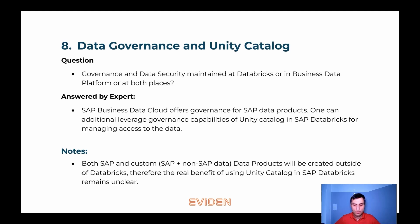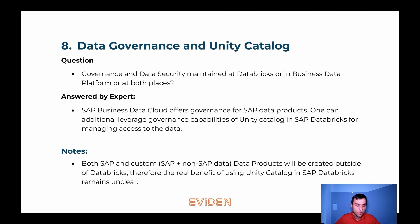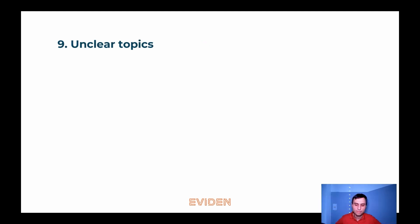Let's quickly discuss the data governance topic and the role of the Unity Catalog. As you might know, both SAP DataSphere and Databricks have their own data catalogs. In the SAP vision, DataSphere acts as both a data extraction and data modeling tool — and in such a world, the role of the Databricks Unity Catalog remains unclear to me. On the other hand, if you plan to use SAP Business Data Cloud primarily to create and share SAP data products with your existing Databricks installation, then the Unity Catalog will play a much more important role.